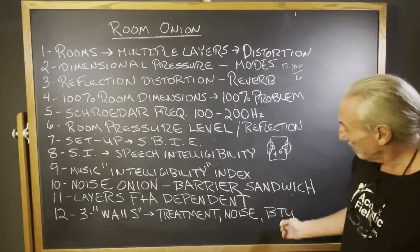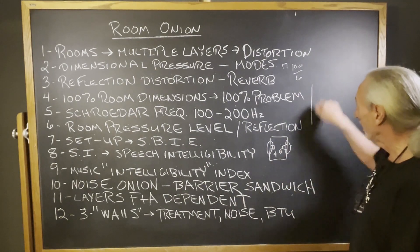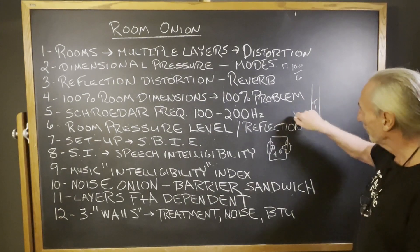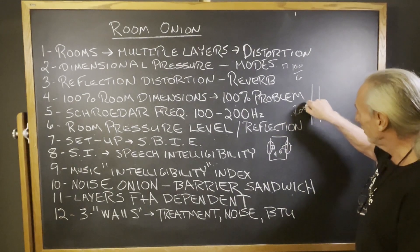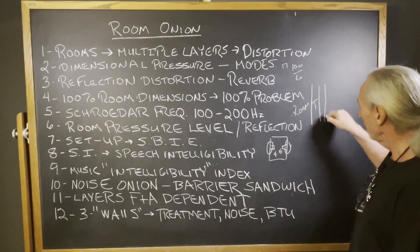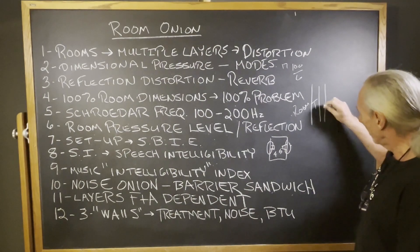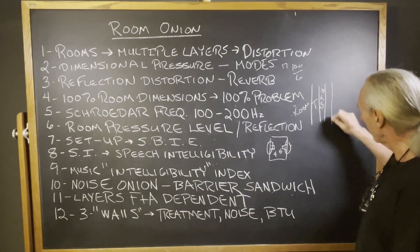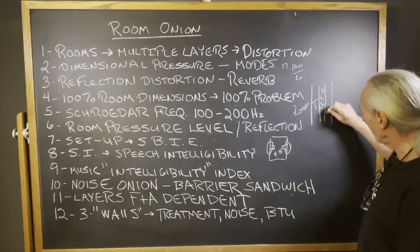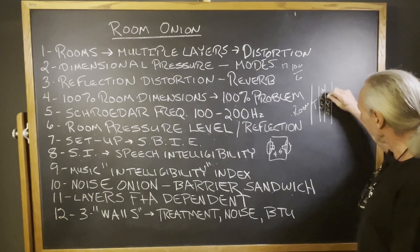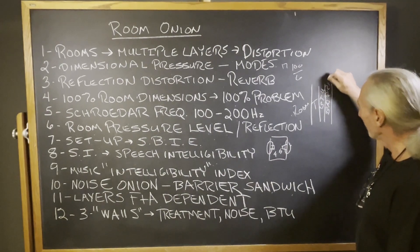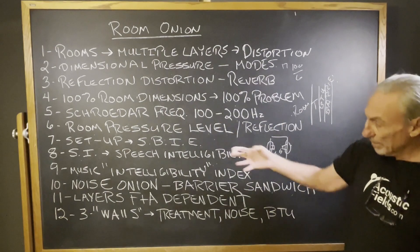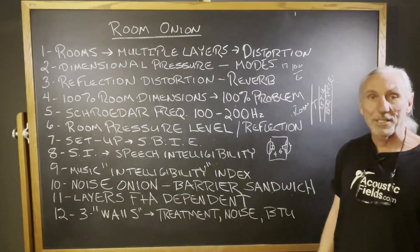Walls. Treatment. Noise. BTU. We have three walls in our room. This is the treatment wall — this is the room face. And then here we could have a BTU wall, which is warm and cold, and here we could have the barrier, which is noise. So you could have three walls. Once again, more layers, more peeling back, more step-by-step approaches.